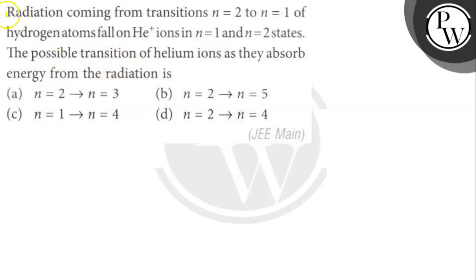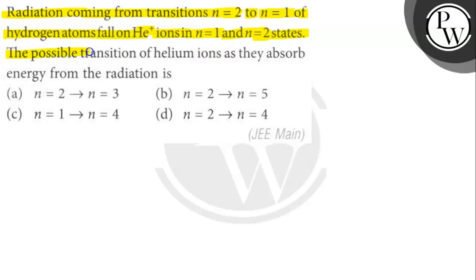Let's read the question. The question says: radiation coming from the transition N=2 to N=1 of hydrogen atoms falls on He+ ions in N=1 and N=2 states. The possible transitions of helium ions as they absorb energy from the radiation — what is the final answer?